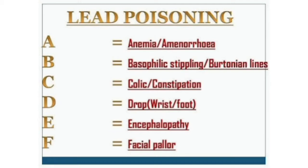The symptoms of lead poisoning are remembered by the mnemonic A-B-C-D-E-F: A for anemia or amenorrhea, B for basophilic stippling or Barton's line, C for colic or constipation, D for drop wrist or foot drop, E for encephalopathy, and F for facial pallor.